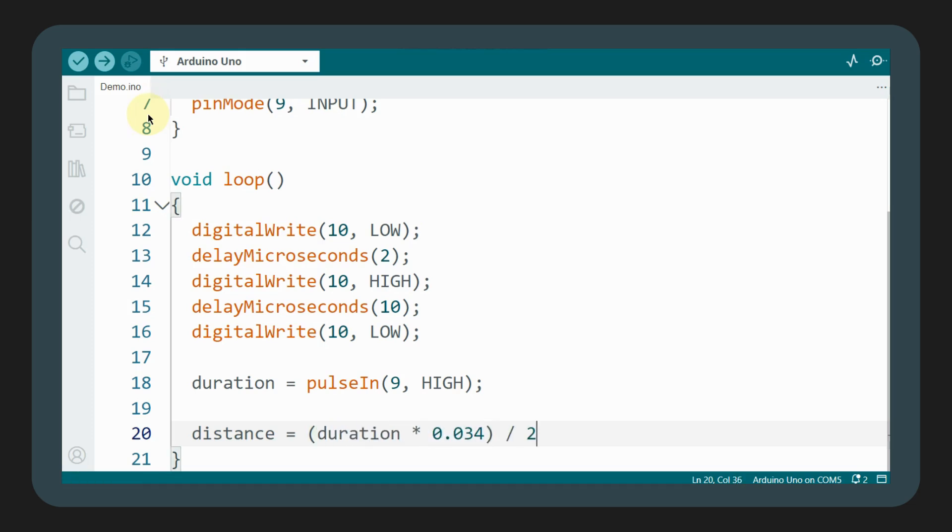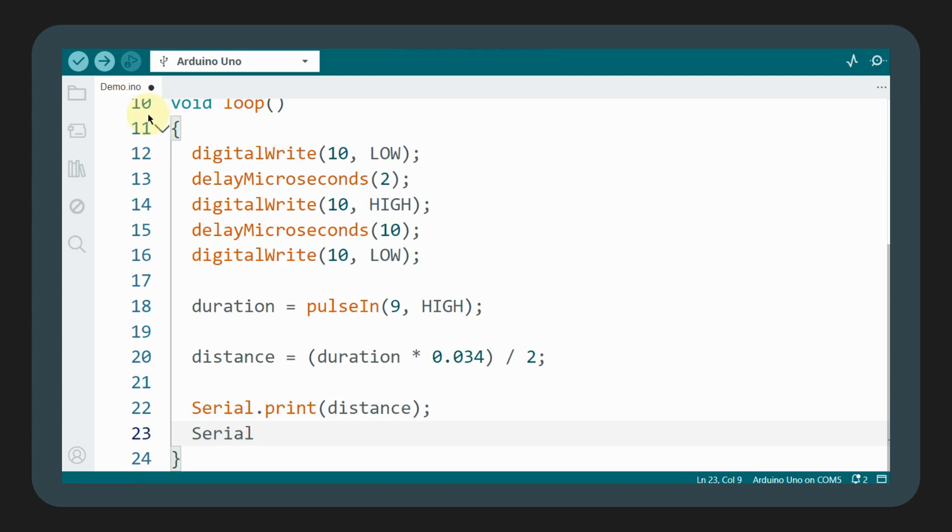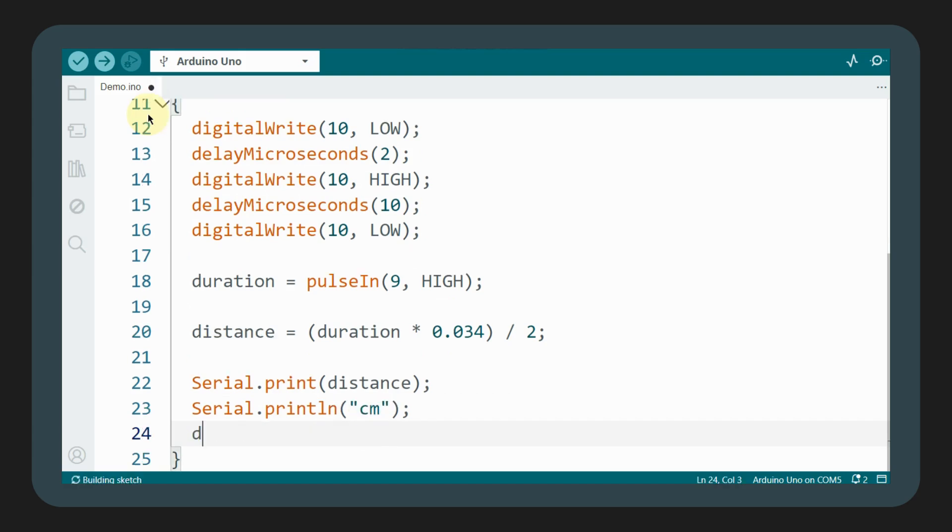Note that we use 0.034 centimeters per microsecond as the speed of sound instead of 340 meters per second. This is because we want the distance in centimeters and the duration of the pulse is in microseconds.